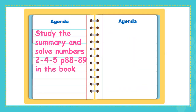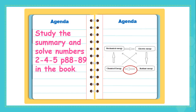That's all for today. Thank you for watching. Study the summary and solve numbers 2, 4, and 5 in your book. Pay attention — in number 5, switch the arrow in the diagram as shown.